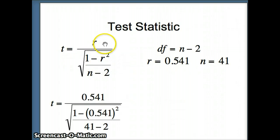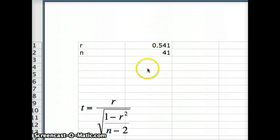So there's our formula. T is R divided by root 1 minus R squared over N minus 2. R is 0.541, 1 minus R squared is 1 minus 0.541 squared, divided by 41 minus 2. So I'll go to Excel to do the computation. We want to find out what T is.